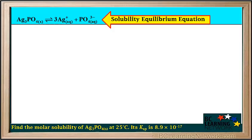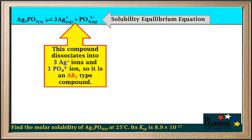The first step is to write the balanced equation for the solubility equilibrium of Ag3PO4. Ag3PO4 forms three Ag+ ions and one phosphate, PO4 3- ion. Note that because this compound dissociates into three Ag+ ions and one PO4 3- ion, it is identified as an AB3 type compound.